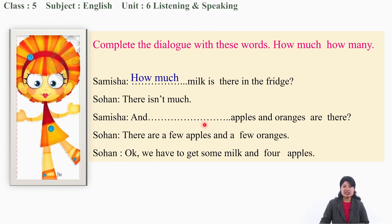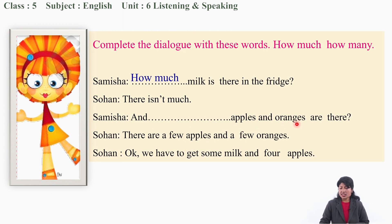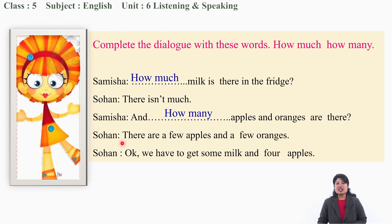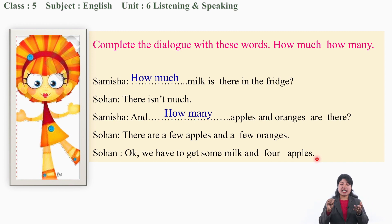'And _____ apples and oranges are there?' Do we say 'how much apples and oranges'? The right answer is 'how many' - 'how many apples and oranges are there?' The answer is: 'There are a few apples and a few oranges.' So we have to get some milk and some apples.